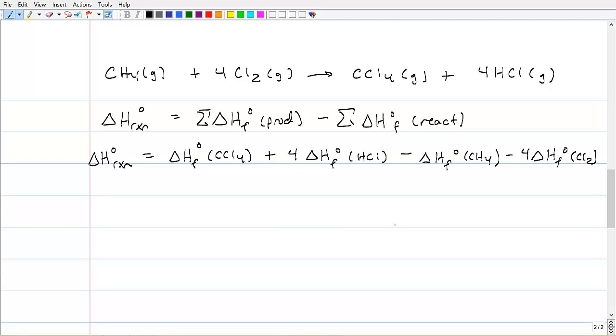Now, this often confuses students what I've done here at the end, but I've just distributed the minus sign to the summation. And so what I always do is I just add up all the products and subtract away all the reactants. It goes much quicker that way. And I don't have to deal with these signs that we play with. Just so you remember, this guy right here, this one is defined as zero because Cl2 gas is the standard state.